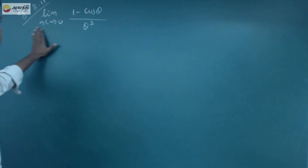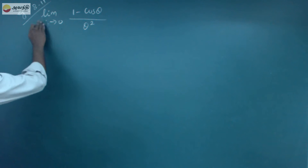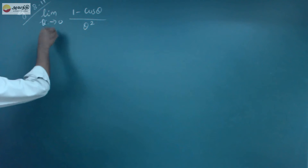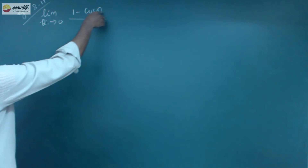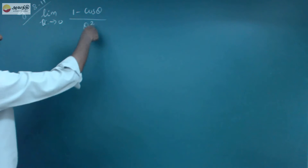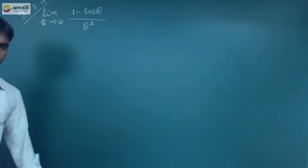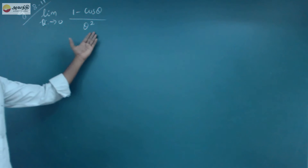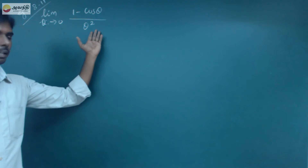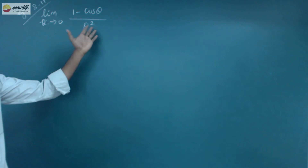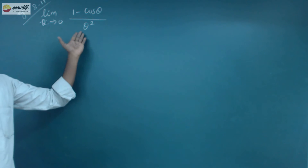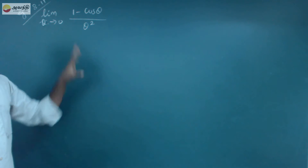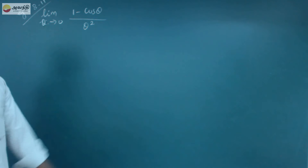Next, limit theta tends to 0 of 1 minus cos theta by theta square. Now, if we substitute theta equal to zero, the denominator is 0, so it's meaningless.